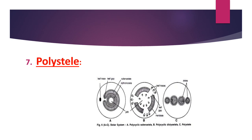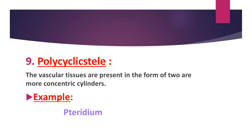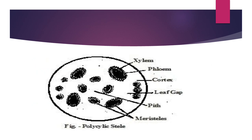Polystele: you can see the diagram of polystele. Atactostele: in this type of stele, the stele is divided into distinct collateral vascular bundles that are scattered — for example, the monocot stem. Polycyclic stele: the vascular tissues are present in the form of two or more concentric cylinders or rings. You can see the diagram of polycyclic stele.